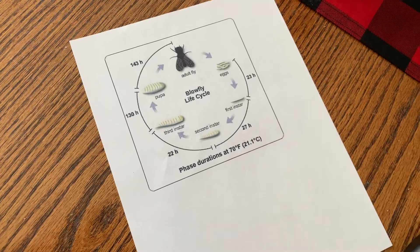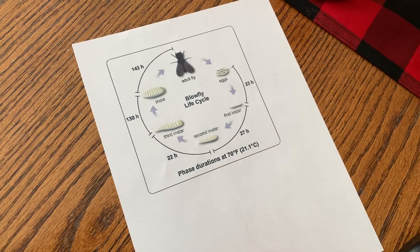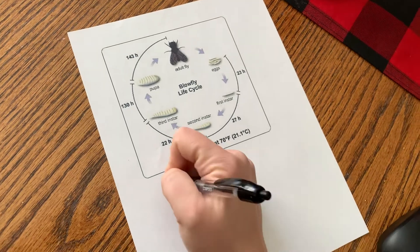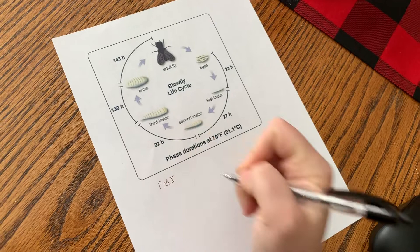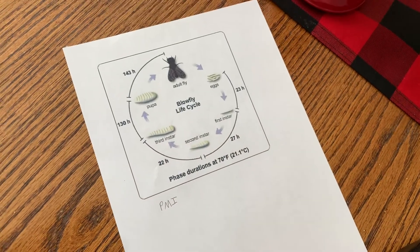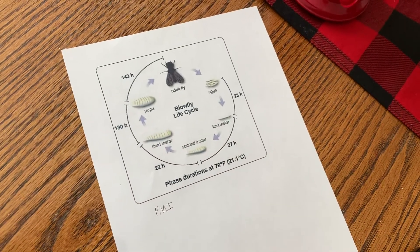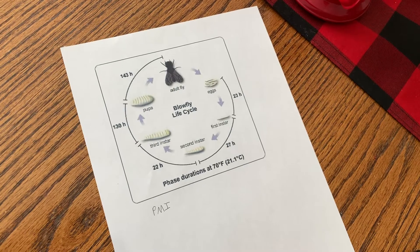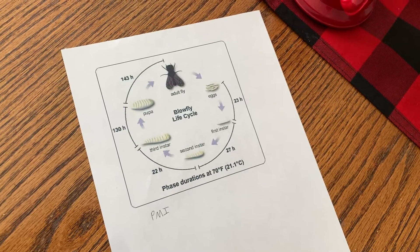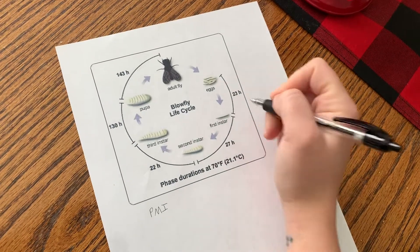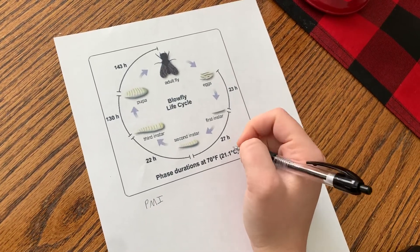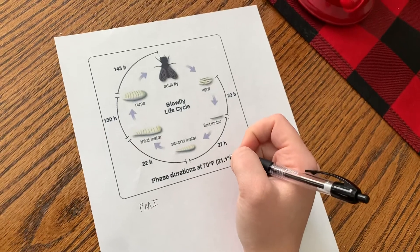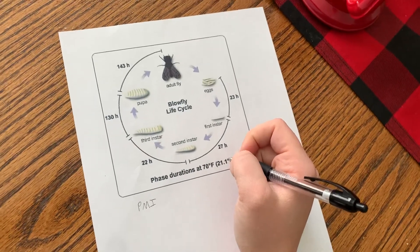Hey everyone, I just want to take a second to explain to you how to do a post-mortem interval calculation for the life cycle of a blowfly. And I do want to start by saying that this is just an example of a life cycle of a blowfly. Not all blowflies have the same time frame for each window between the phases, but for our purposes in class this is the one that we're going to use just to stay consistent with our calculations.